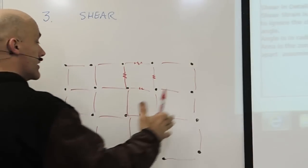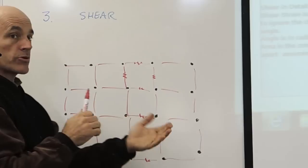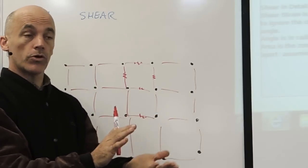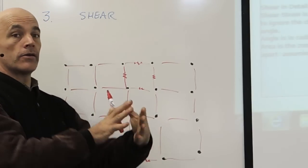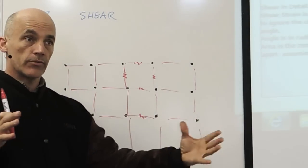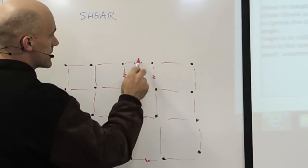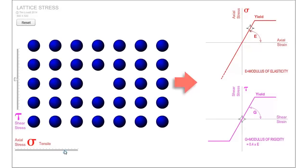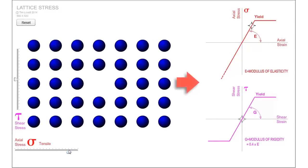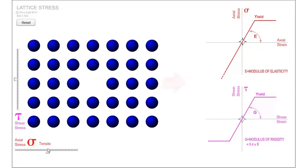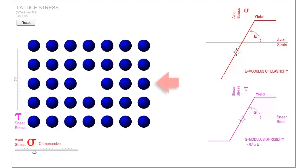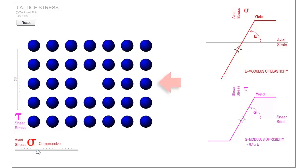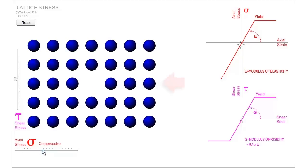The same happens when I do compression. If I try to push those together, those springs are now getting too close. Those atoms don't want to be that close. And so when I let go, they're going to spring back to where they were to start with. All right, so this is elastic. We can either stretch the atoms apart, which is called tension or tensile stress. Or we can squash the atoms from their natural position, which is compression, producing compressive stress.